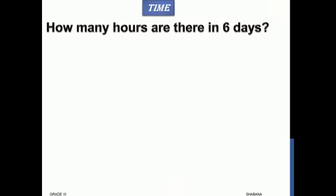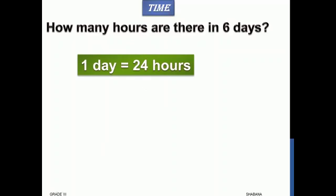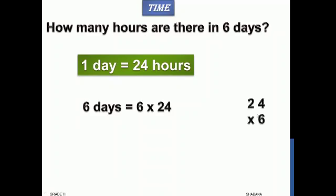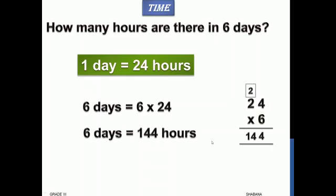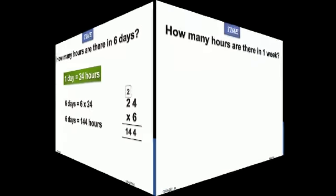Now let us do some conversion. How many hours are there in six days? We know that one day is equals to 24 hours. So to find how many hours are there in six such days, we have to multiply six with 24. So six days is equals to six multiplied by 24. Six fours are 24, and then six twos are 12, 12 plus 2 is 14. So six days has 144 hours.